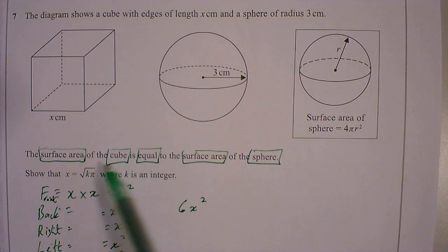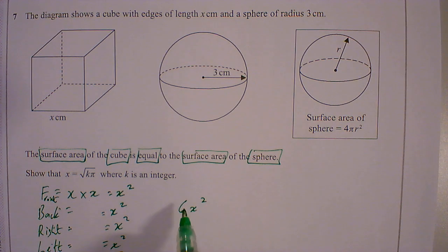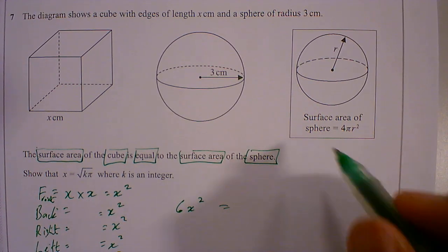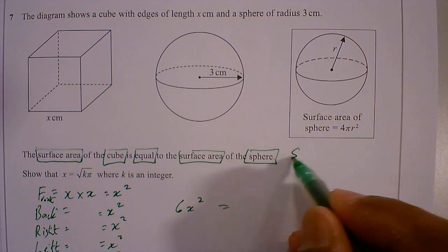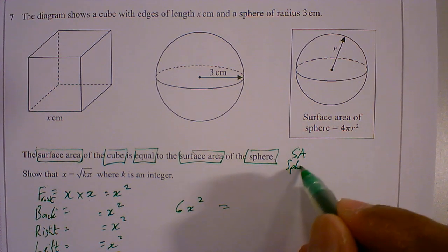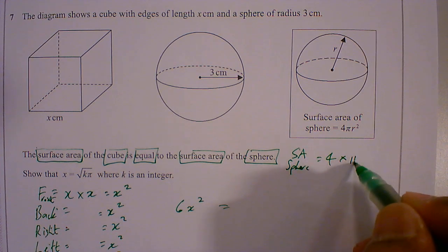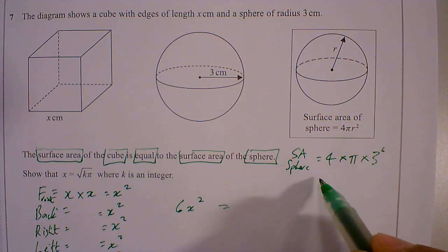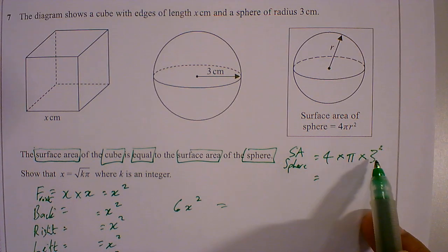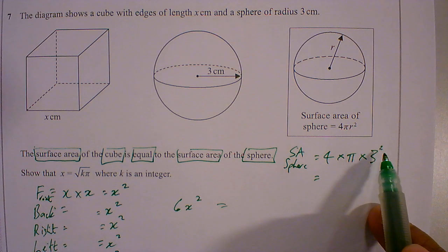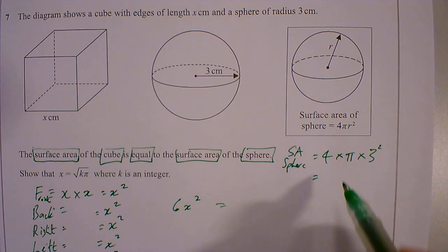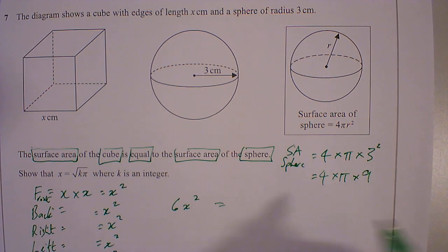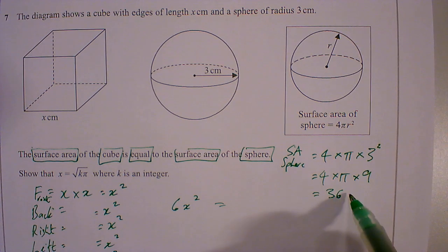So the surface area of the cube, which is 6x², is equal to the surface area of the sphere. For the sphere, we're going to use this formula. Surface area of the sphere equals 4 times π times r. r is 3, so 3². 3² is 9. So 4 times π times 9. 9 times 4 is 36. So this is 36π.